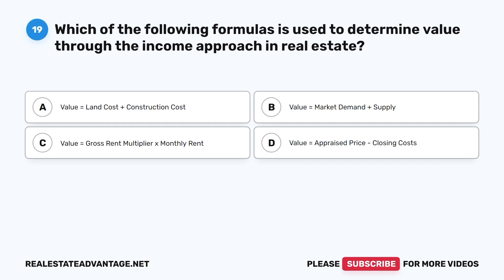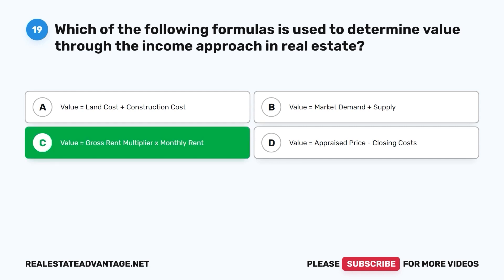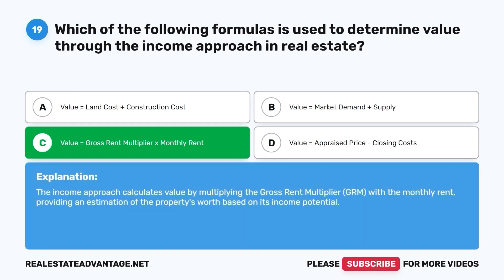Question 19. Which of the following formulas is used to determine value through the income approach in real estate? A. Value equals land cost plus construction cost. B. Value equals market demand plus supply. C. Value equals Gross Rent Multiplier times monthly rent. D. Value equals appraised price minus closing costs. The correct answer is C. The income approach calculates value by multiplying the Gross Rent Multiplier (GRM) with the monthly rent, providing an estimation of the property's worth based on its income potential.